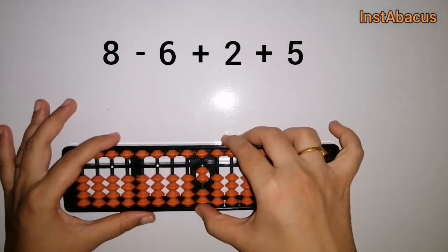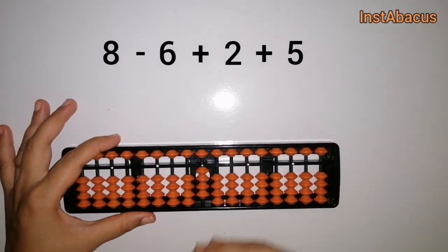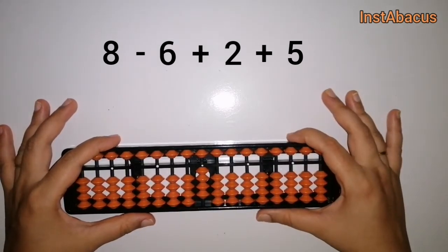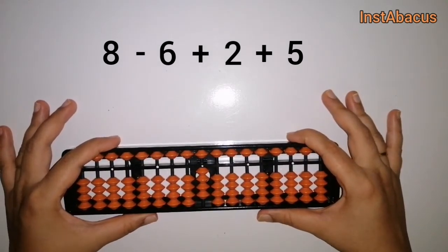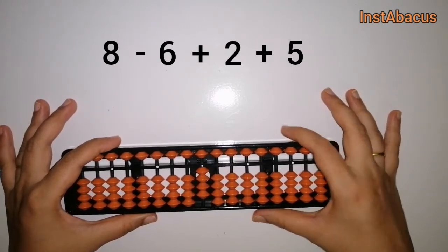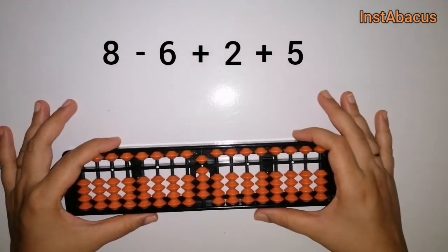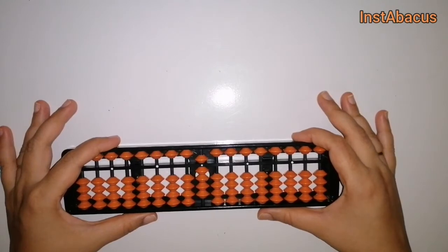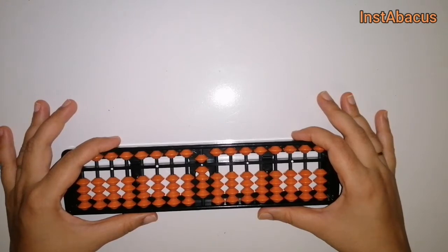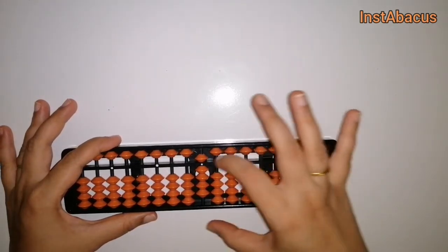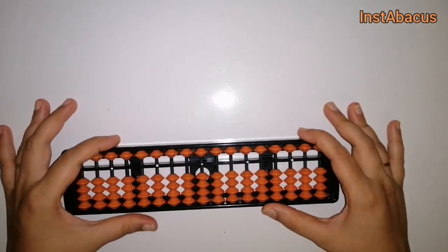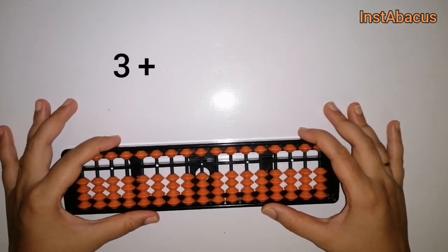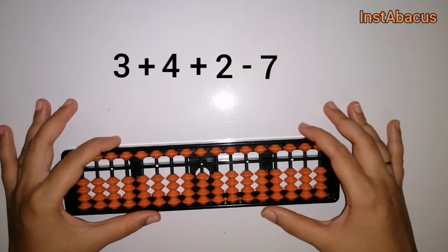Plus two: by moving two earthly beads towards the answering bar. And then we have to add five again. So our answer is nine. That's correct! Eight minus six plus two plus five equals nine.